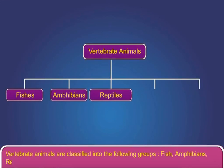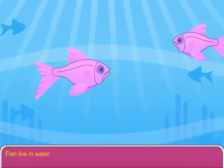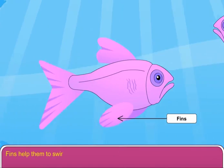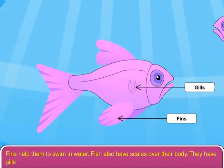Fish live in water and have a streamlined body that helps them to swim in water. Fins help them to swim in water. Fish also have scales over their body. They have gills to breathe in water.